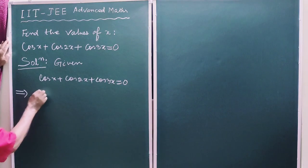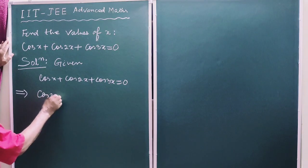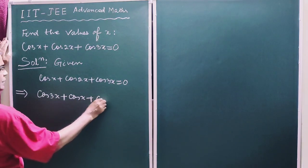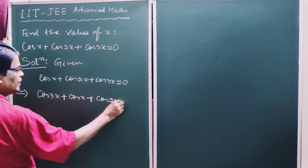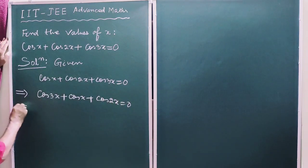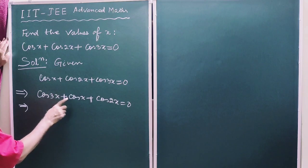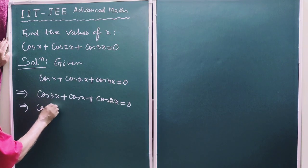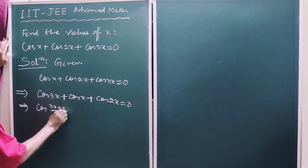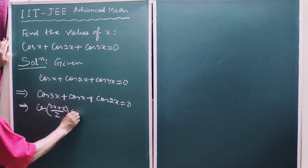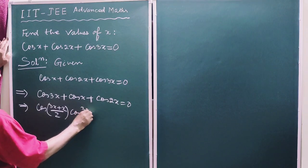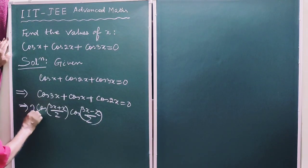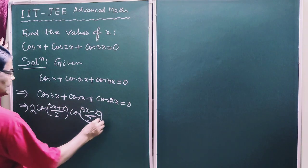This implies cos 3x plus cos x plus cos 2x is equal to 0. Now let us apply the formula: cos c plus cos d equals 2 cos of c plus d by 2 times cos of c minus d by 2.